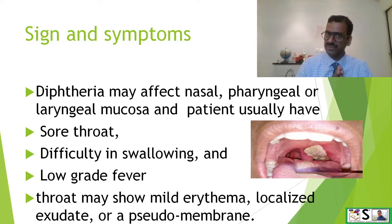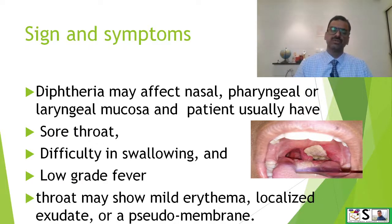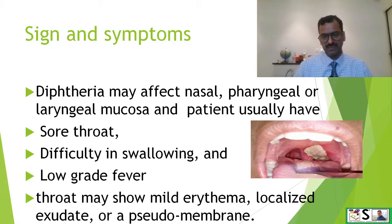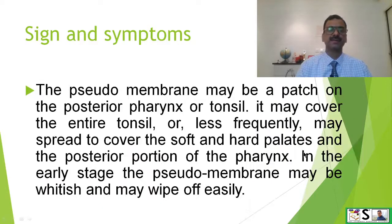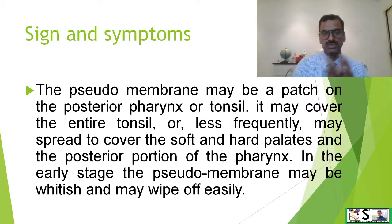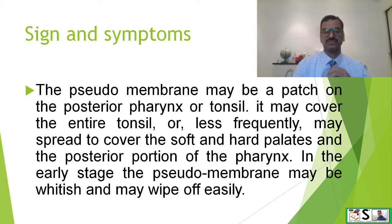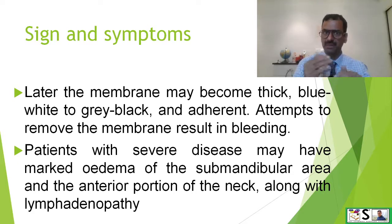What are the signs and symptoms of diphtheria? Diphtheria may affect the nasal, pharyngeal, or laryngeal mucosa. The patient usually has a sore throat, difficulty in swallowing, low grade fever, and the throat may show mild erythema, localized exudate, or a pseudomembrane. The pseudomembrane may be a patch on the posterior pharynx or tonsil, and sometimes it may cover the whole tonsil. Less frequently it may spread to cover the soft and hard palate in advanced stages. In the early stage the pseudomembrane may be whitish and wipe off easily, but later it may become thick, bluish white or grey-black, and adherent.